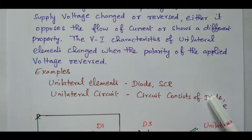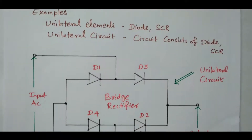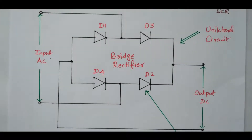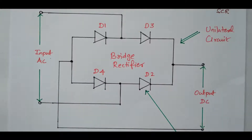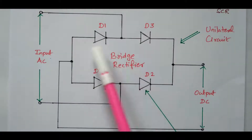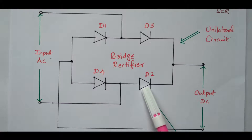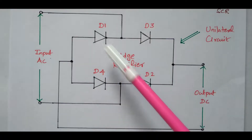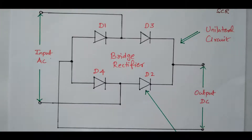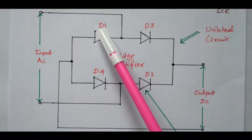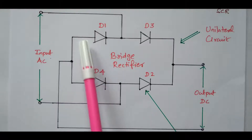A circuit using diode and SCR is called a unilateral circuit. Looking at the circuit diagram, this is a bridge rectifier with four diodes: D1, D2, D3, D4. This entire circuit is called a unilateral circuit. The diode is the unilateral element — it conducts only in one direction. During the positive half cycle, D1 and D2 conduct while D3 and D4 do not, because they are reverse biased. During the negative half cycle, D3 and D4 conduct but D1 and D2 do not. AC voltage is given as input and we get DC output. Four diodes are connected to handle both positive and negative cycles.